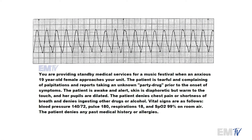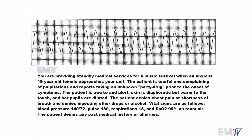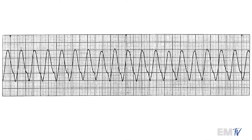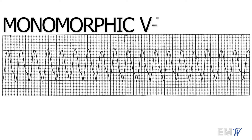In this card we're given a scenario that involves a teenager who experimented with a party drug and is now presenting with this rhythm. If we look closely, this is a wide complex tachycardic rhythm going about 180 beats per minute. I don't see any semblance of a P wave, and because the QRS complex is wide and the morphology remains consistent, I will identify this rhythm as monomorphic VTAC.